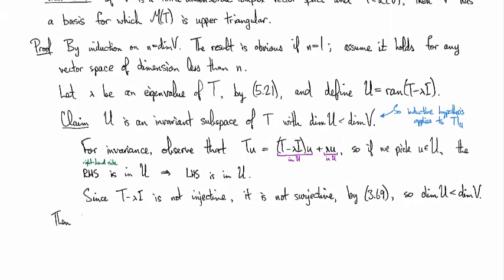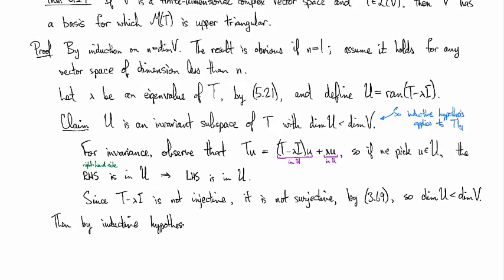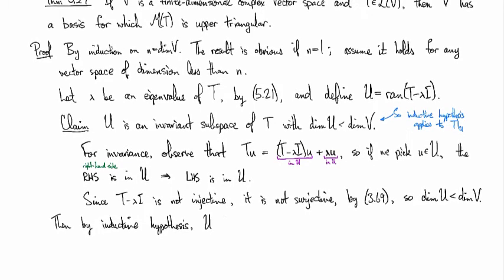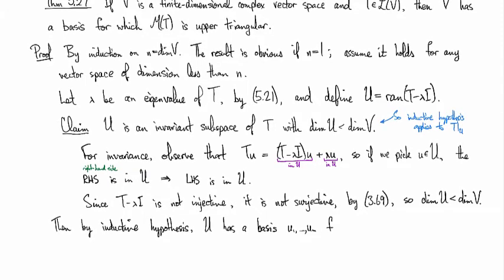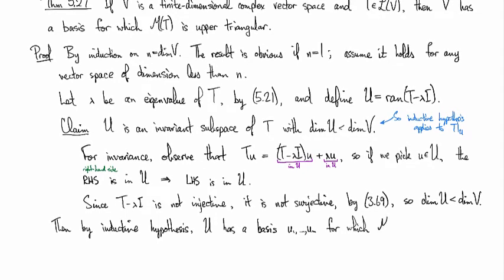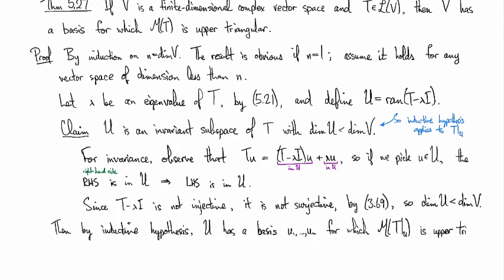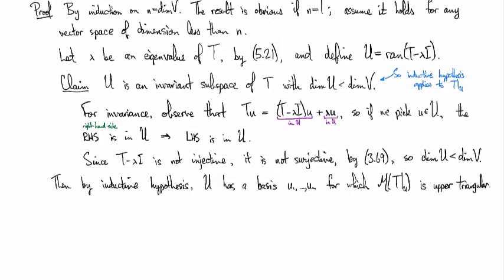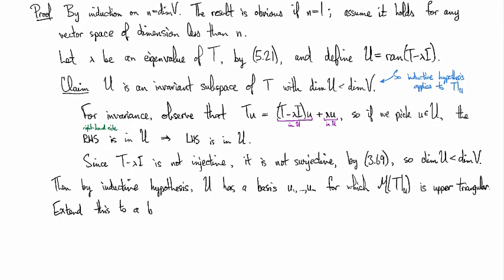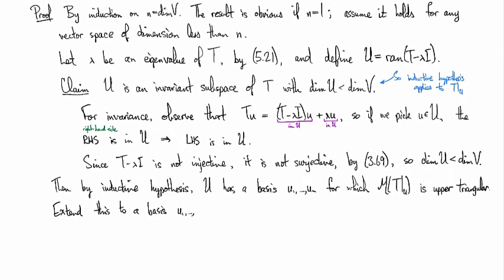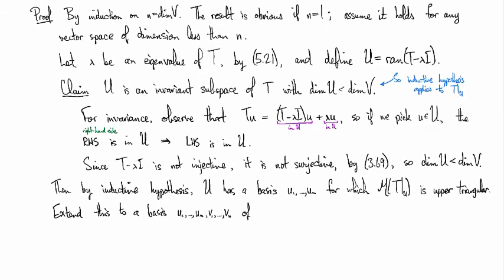So then we can apply the inductive hypothesis. By the inductive hypothesis, we know that U has a basis, we'll call it u1 up through um, for which the matrix of T restricted to U is upper triangular. Okay, so then we can extend this to a basis of V.